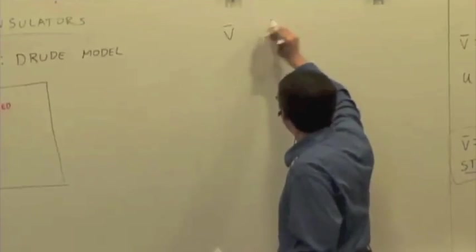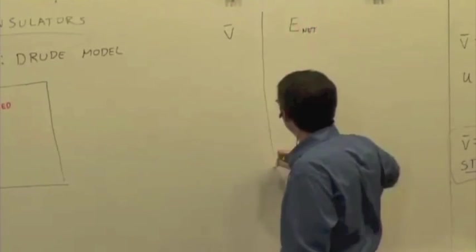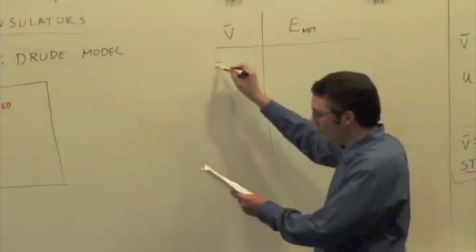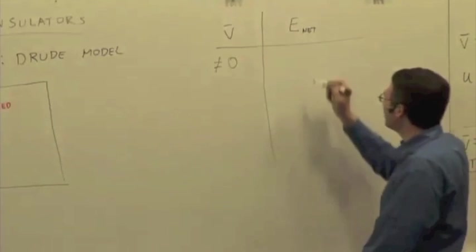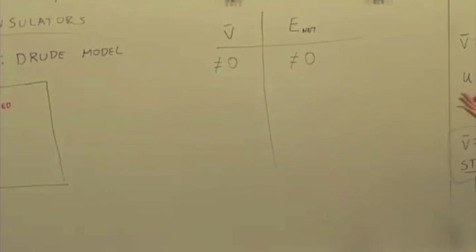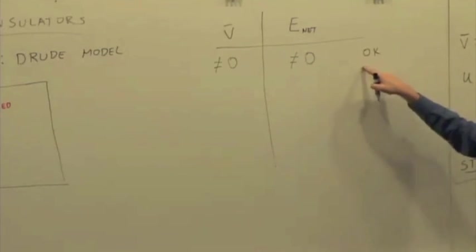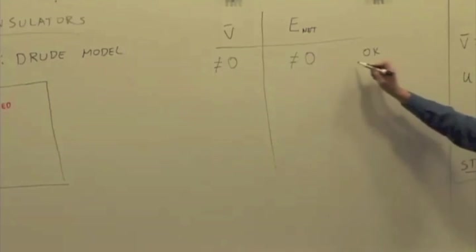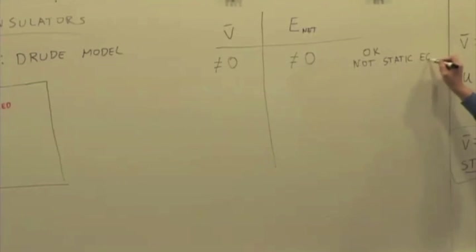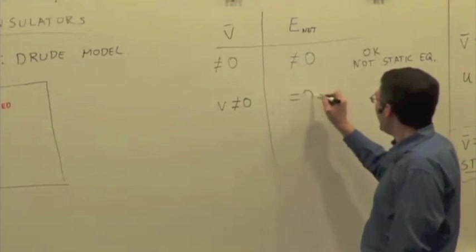Here's V. Let's make a little table of V and the net electric field inside the material. Let's say V is not equal to zero. E not equal to zero. Is that possible? Sure. But is it a case of static equilibrium? No, this is not static equilibrium. V not equal to zero and E equal to zero. Is that possible? This equation says it can't be. So not possible.